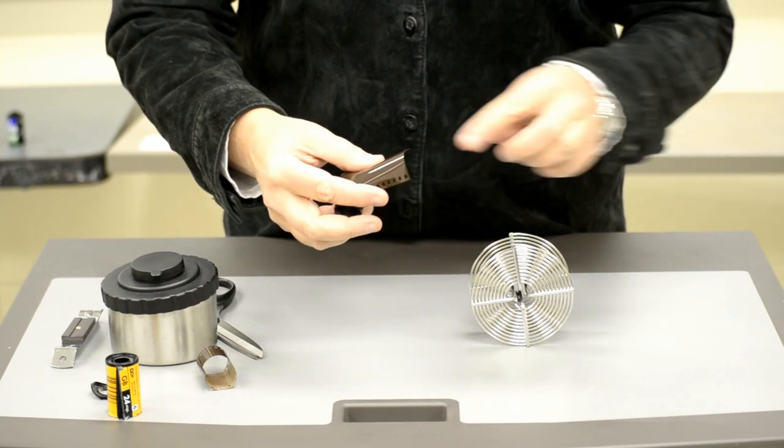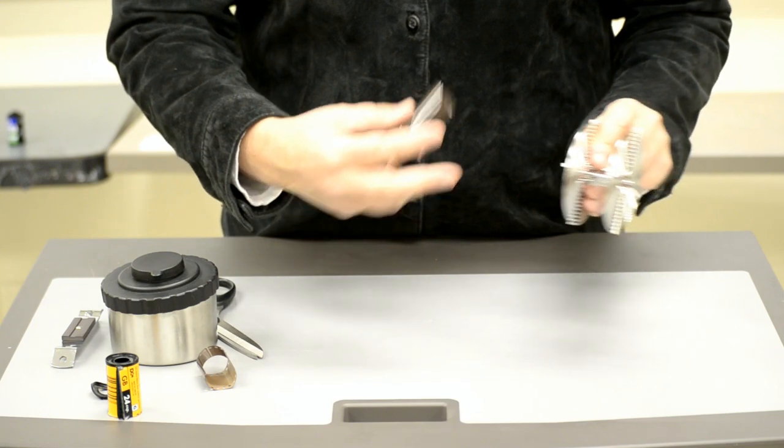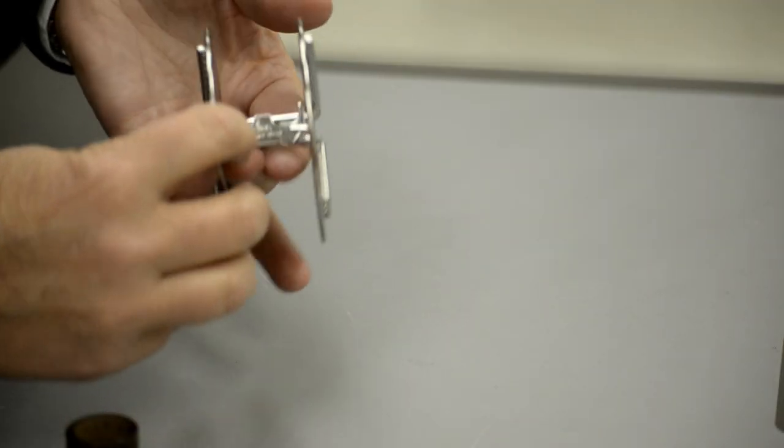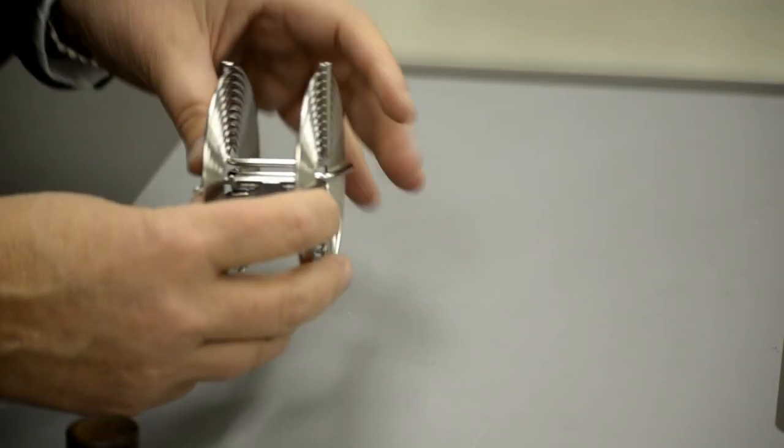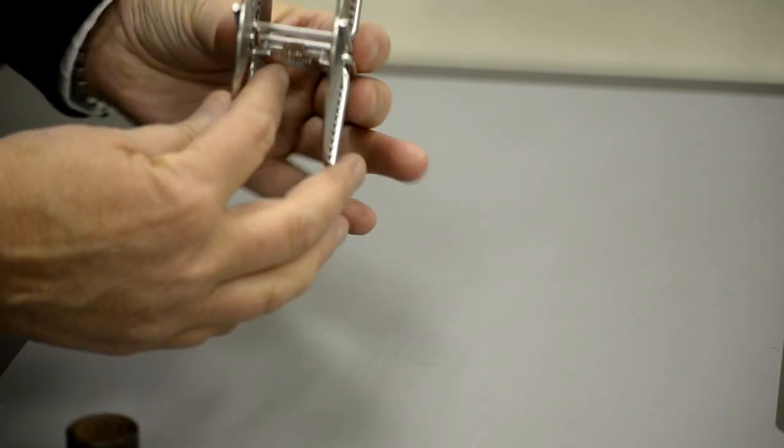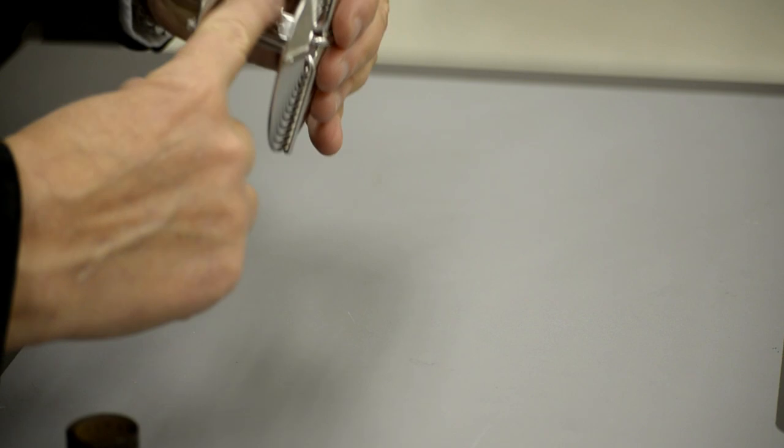This stiff edge is going to go into the center of the reel, and the edges where the sprocket holes are are going to be placed over these two prongs that are sticking up on this flat plate in the center core of the reel.